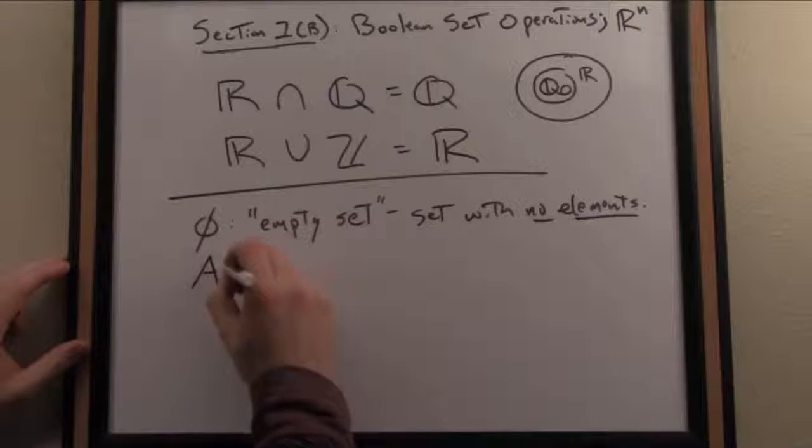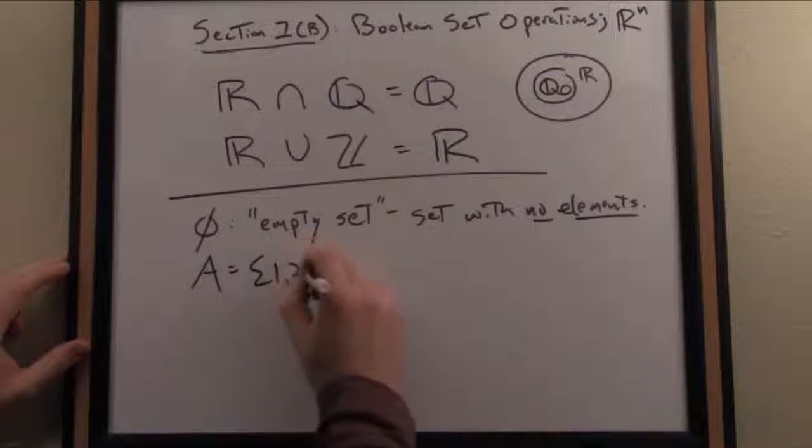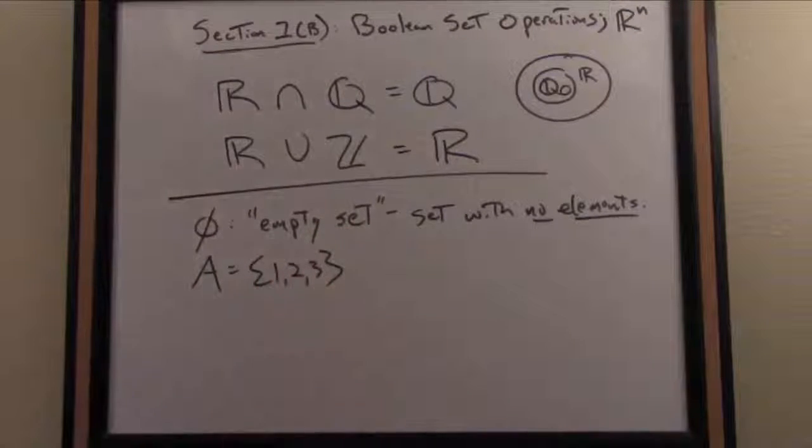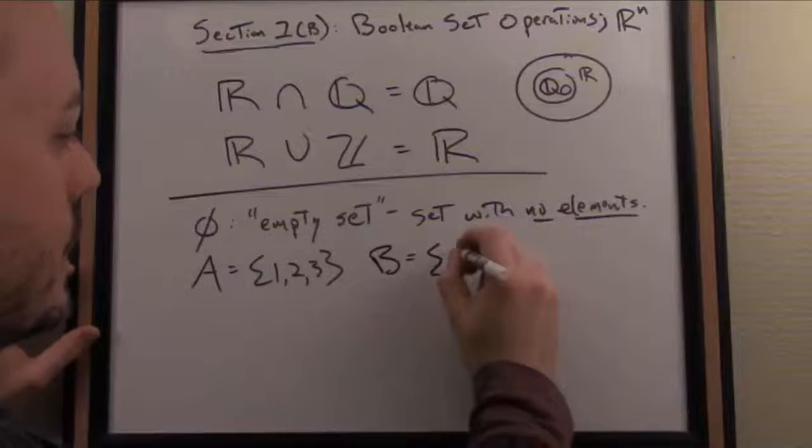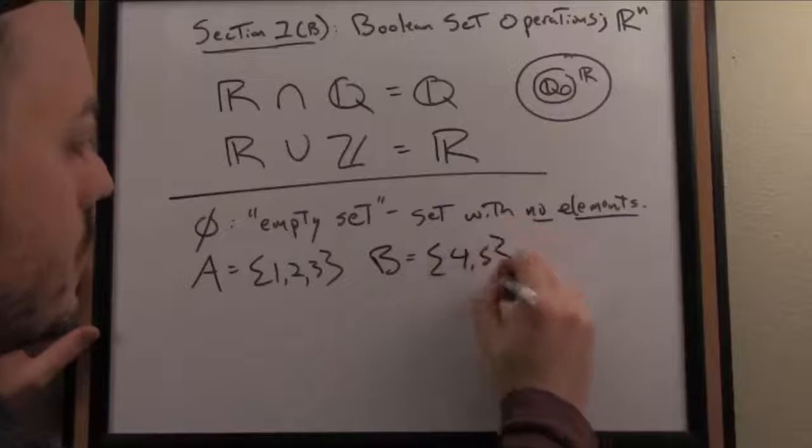For example, if we take our set A, let's go back to our universe of {1, 2, 3, 4}. Let's say the set A is {1, 2, 3}. I'm going to tweak this a little bit.